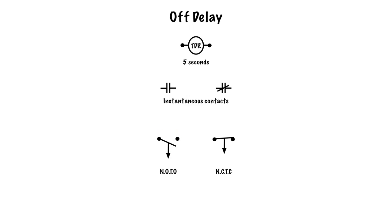The big difference between an off delay and an on delay is that the timing for these contacts begins when the relay is de-energized, after it has been energized. So when TDR energizes, what was once a normally open contact becomes closed, and what was once a normally closed contact becomes open — that happens instantaneously. For the off-delay contacts, they also respond instantly: the normally open time-to-open contact will close instantly, and the normally closed time-to-close contact will open instantly, as long as TDR is energized.